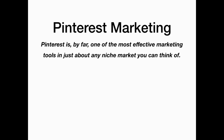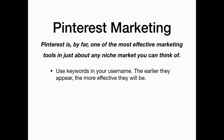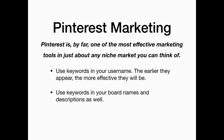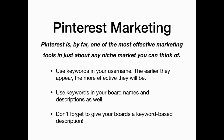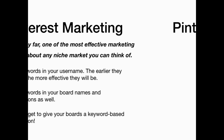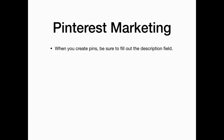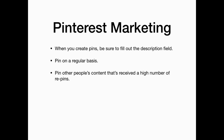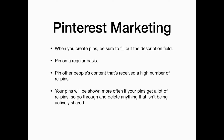Pinterest is by far one of the most effective marketing tools in just about any affiliate niche market. Use keywords in your username — the earlier they appear the more effective they will be. Also use keywords in your board names and descriptions, and give your boards a keyword-based description. When you create pins, be sure to fill out the description field, then pin on a regular basis. Also pin other people's content that's received a high number of repins, and remember your pins will be shown more often if they get a lot of repins, so delete anything that isn't being actively shared.